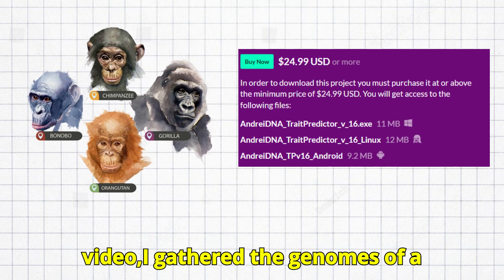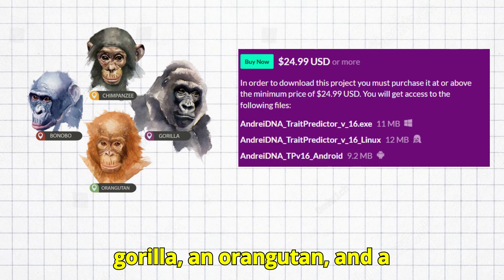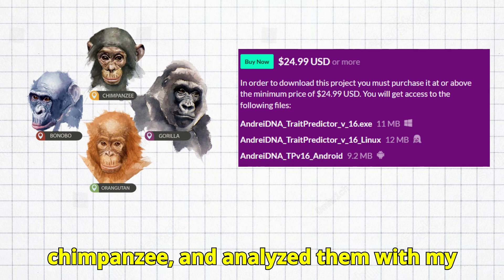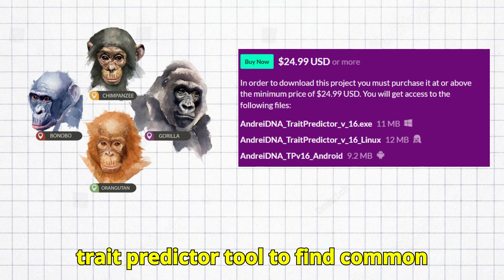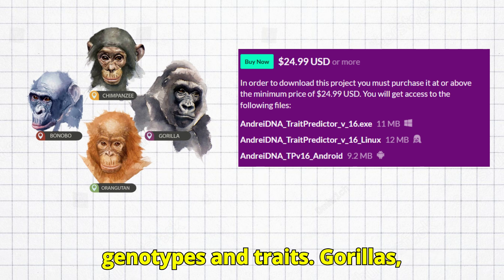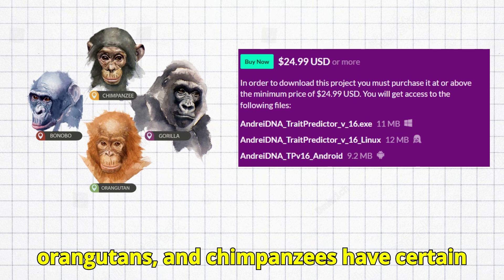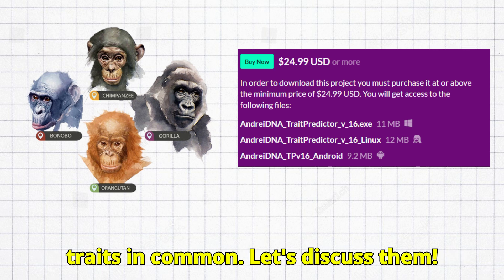For this video, I gathered the genomes of a gorilla, an orangutan, and a chimpanzee, and analyzed them with my trait predictor tool to find common genotypes and traits. Gorillas, orangutans, and chimpanzees have certain traits in common. Let's discuss them.